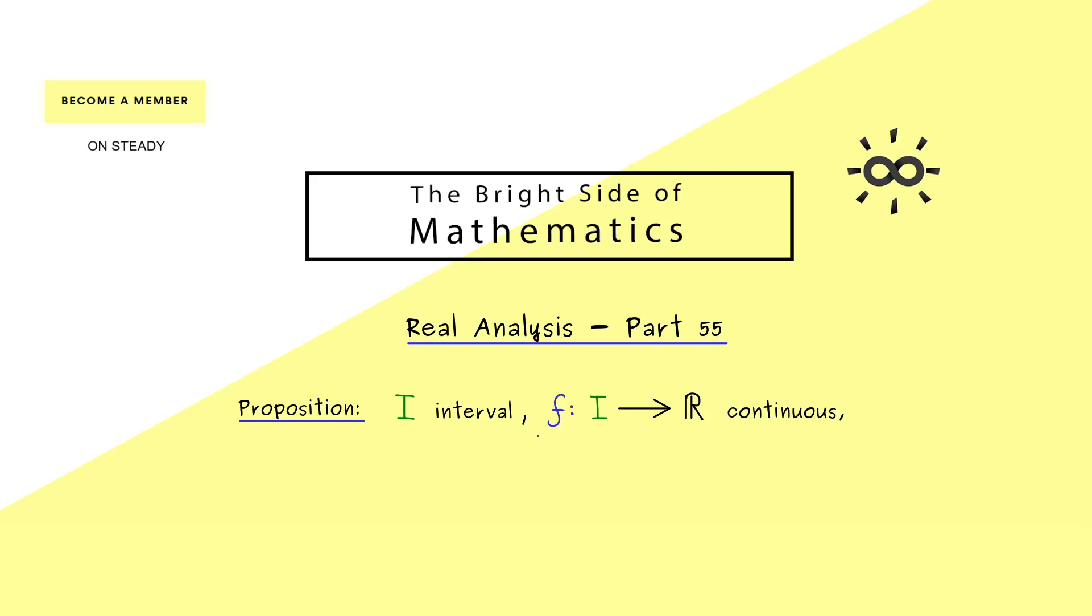We have an interval I and f is defined on this interval as a continuous function. Now we know such a function f has an antiderivative, and usually we call it capital F. So these are the assumptions of our proposition. And now the claim of the proposition comes in when we look at another function we call capital G.